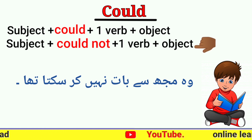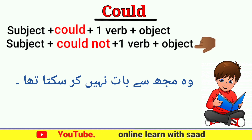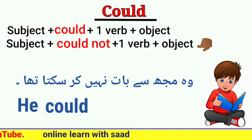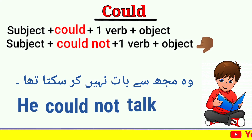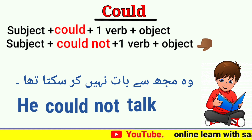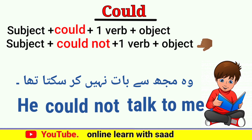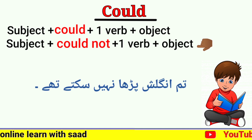'وہ مجھ سے بات نہیں کر سکتا تھا' — subject 'وہ' یعنی he، پھر could not، پھر verb 'بات کرنا' یعنی talk، پھر object 'مجھے' یعنی me — He could not talk to me۔